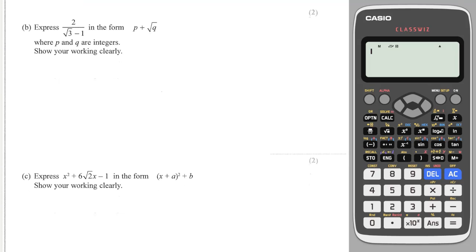Now when we are asked to rationalise the denominator, if we've got a surd and a rational number, like a whole number, then we need to multiply that fraction by the denominator but with the sign swapped — like this.